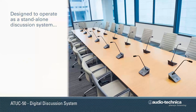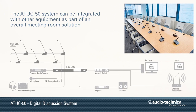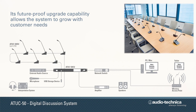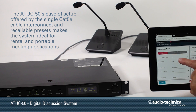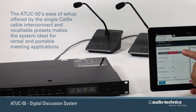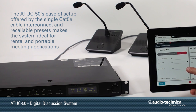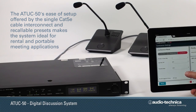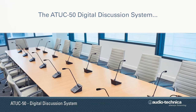Designed to be operated as a standalone discussion system or integrated with other equipment as part of an overall meeting room solution, the ATUC50's future-proof upgrade capability allows the system to grow with customer needs. Additionally, the setup ease offered by the single CAT5E cable interconnect, web remote configuration feature, and recallable conference setting presets make the ATUC50 ideal for rental and portable meeting applications.